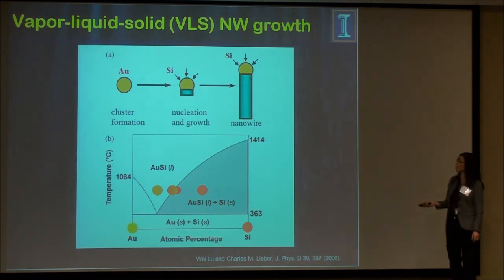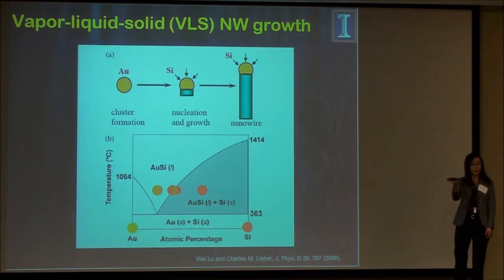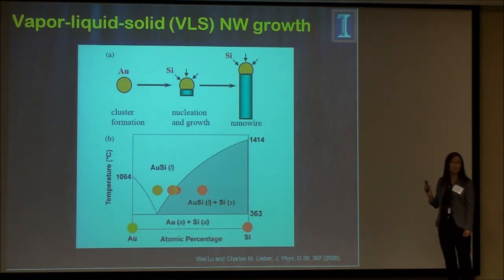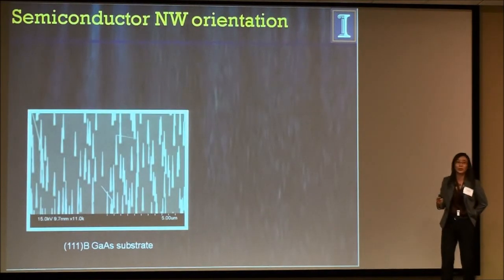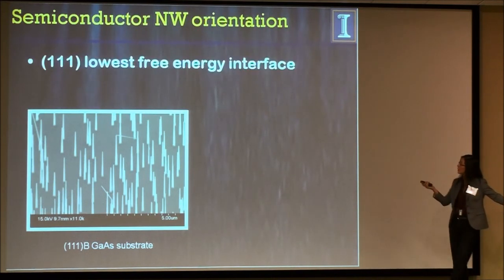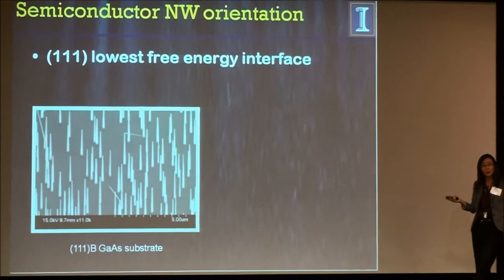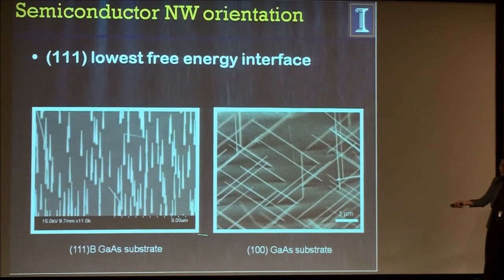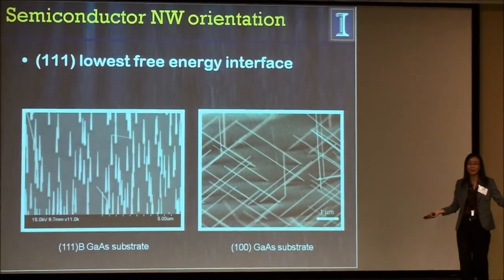As precipitation of the semiconductor occurs, the gold particle stays at the growth front and leaves a trail of semiconductor with the same dimension as the particle size. Thermodynamically, the ⟨111⟩ direction has the lowest-energy free surface interface, so you always get 111B — that's the lowest energy interface. Depending on the substrate used, this can be vertical or out-of-plane. These are all 111 directions on different substrates.